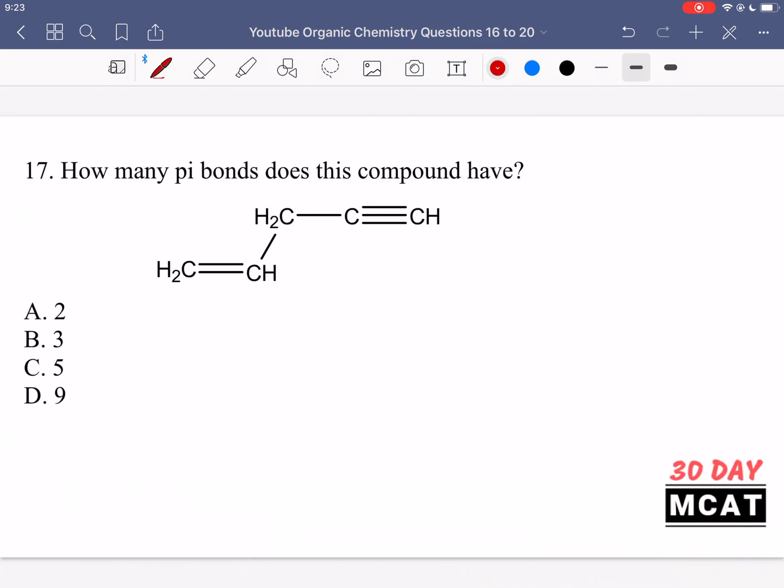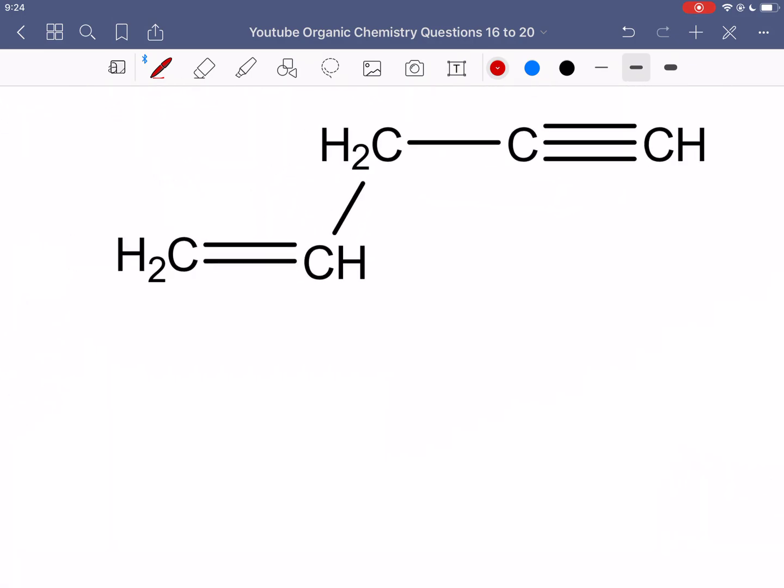In question 17, we're asked how many pi bonds does this compound have? So with any compound, you should know that the bonds between them are made up of sigma bonds. So every single bond I have between these carbons is a sigma bond, which is made from the overlap of the different hybridized orbitals. And then after that, if I have another bond that is made through unhybridized p orbitals coming together, that is a pi bond.